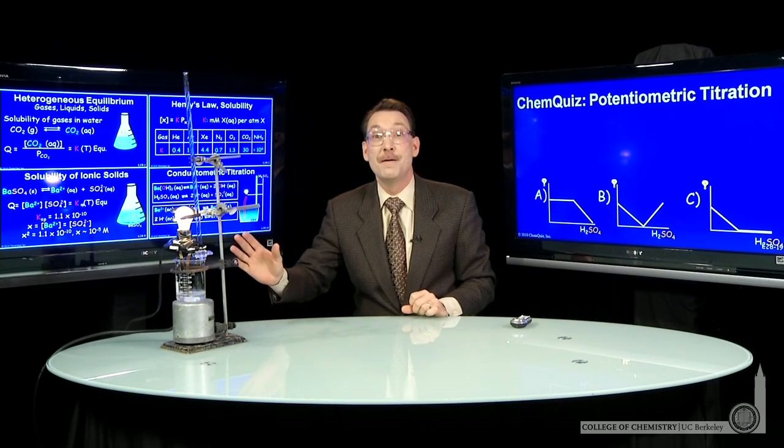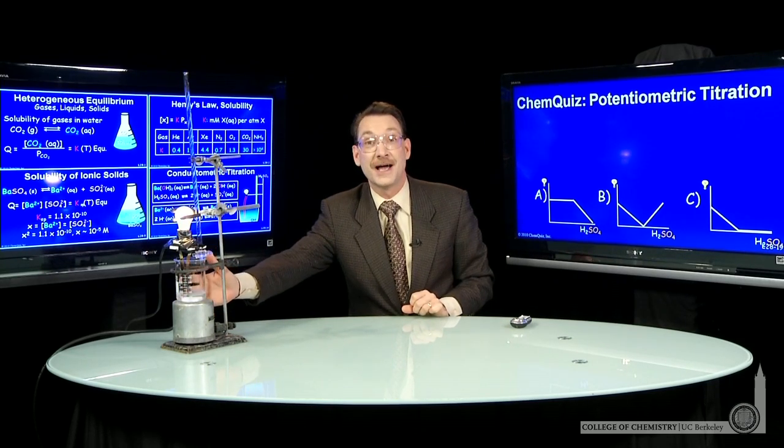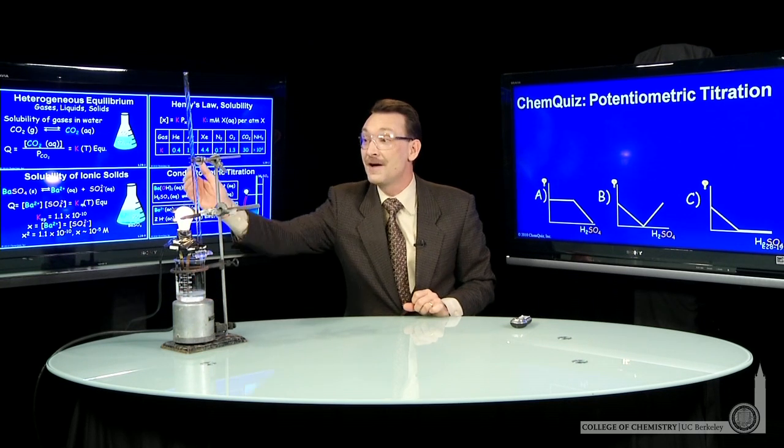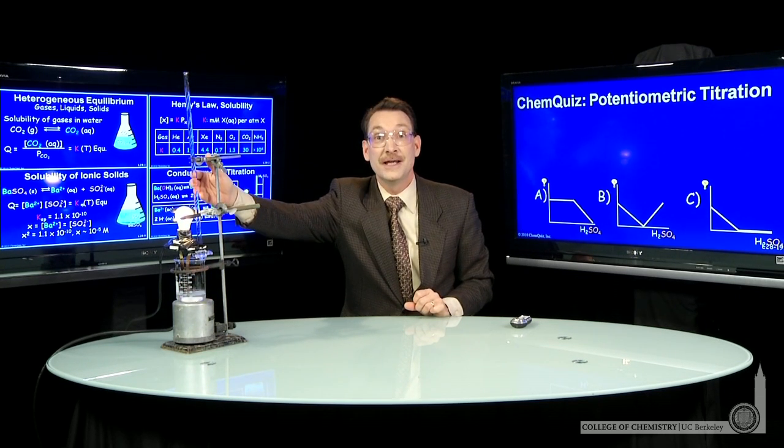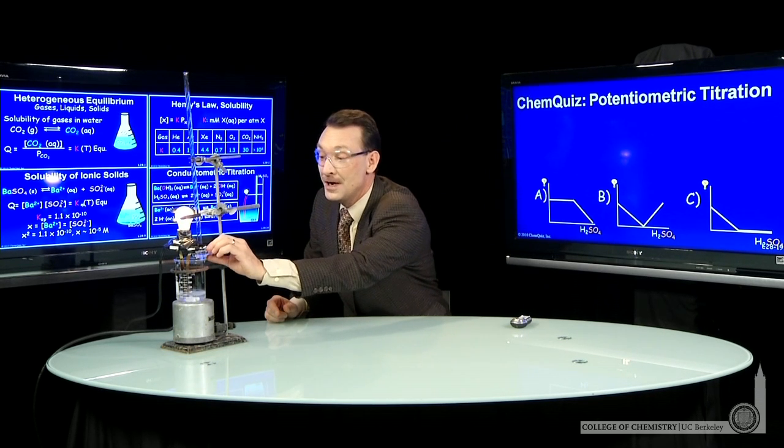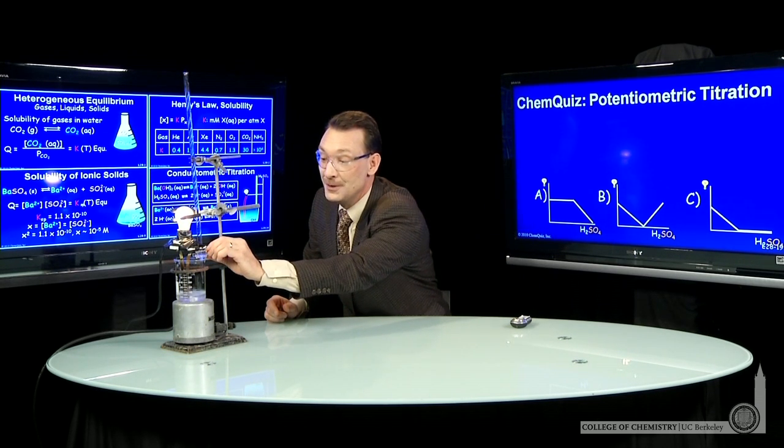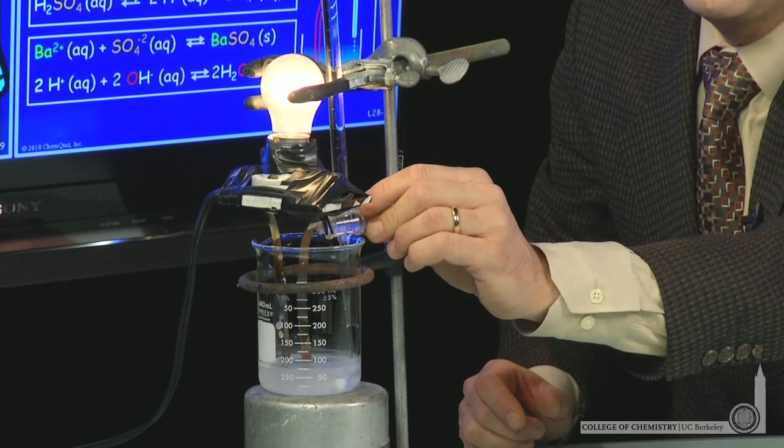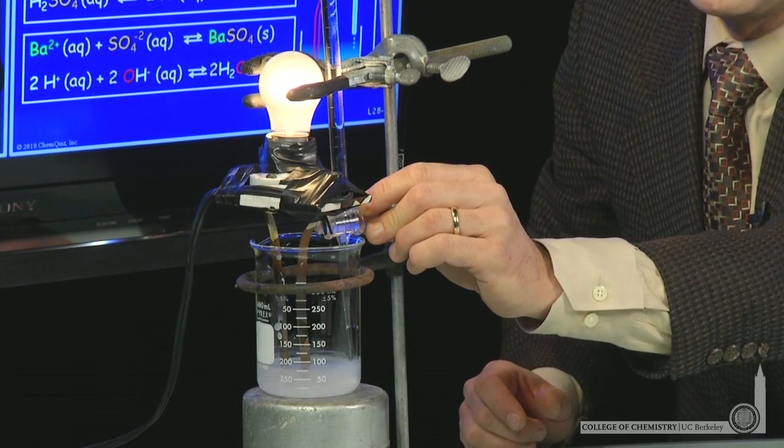Here I have barium hydroxide in this lower flask, and I have H2SO4 in this burette. So I can start H2SO4 adding into the barium hydroxide solution. And as I do that, you'll notice a couple things.